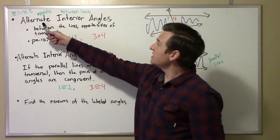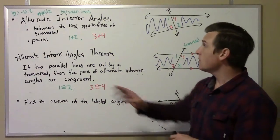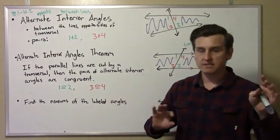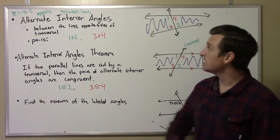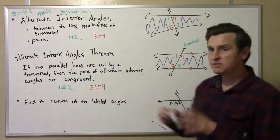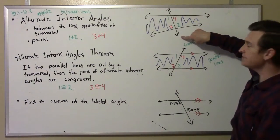Alternate means switching back and forth, or opposite - one's on one side and one's on the other. Interior means between the two lines, not the transversal line, but the other two.